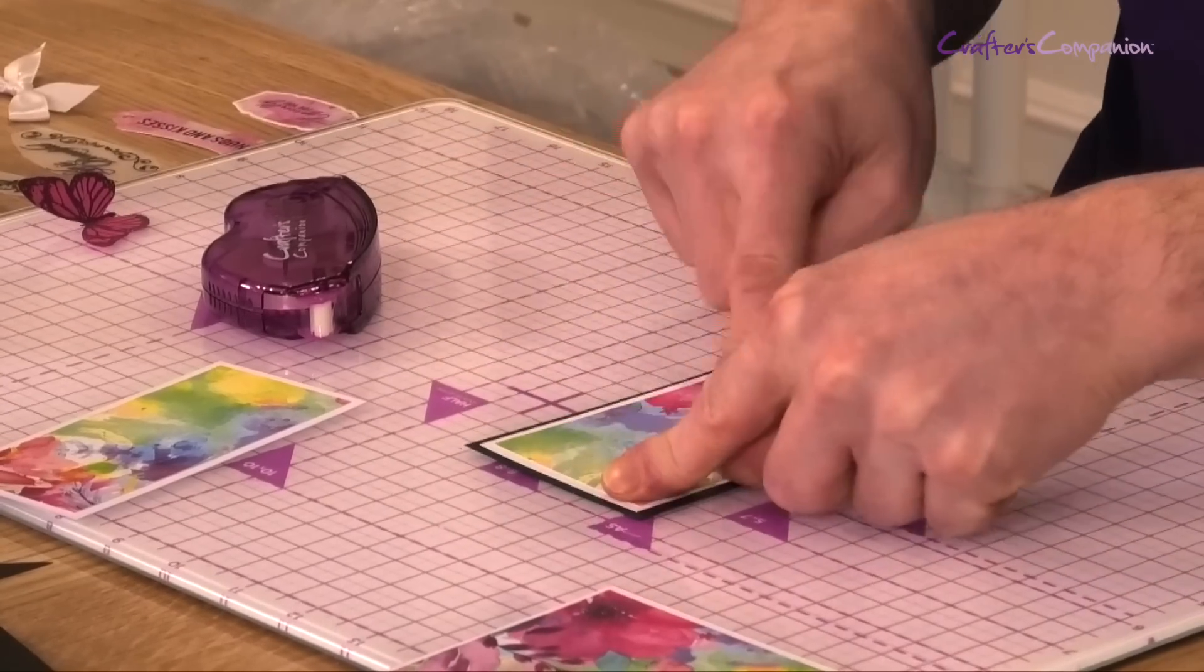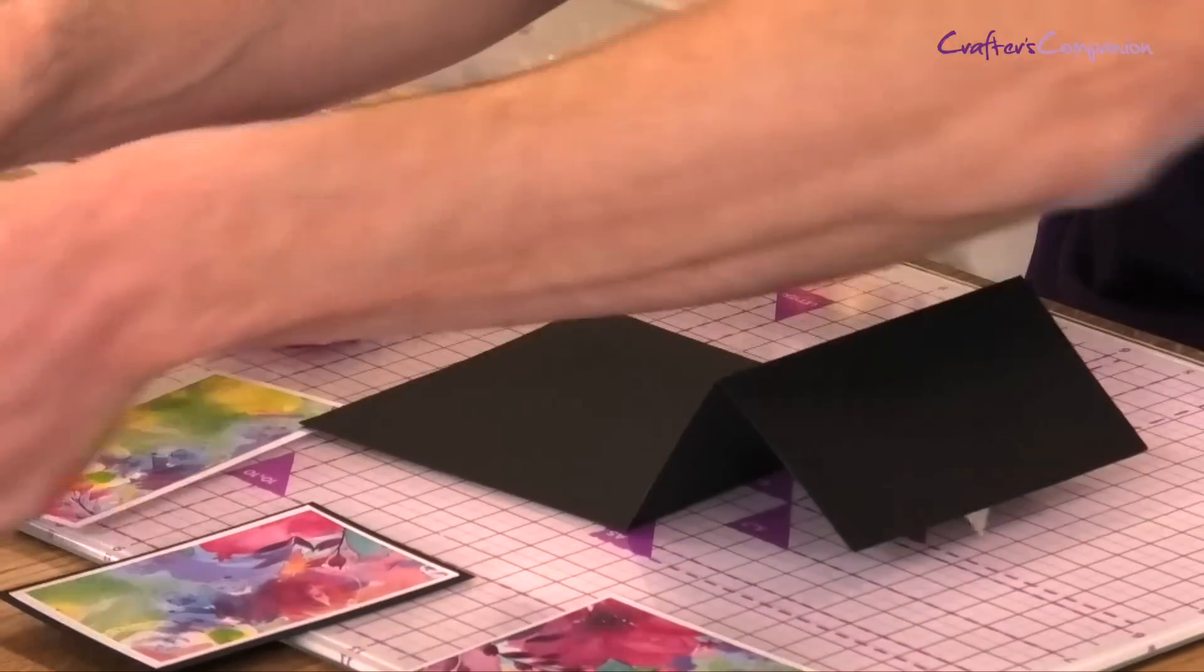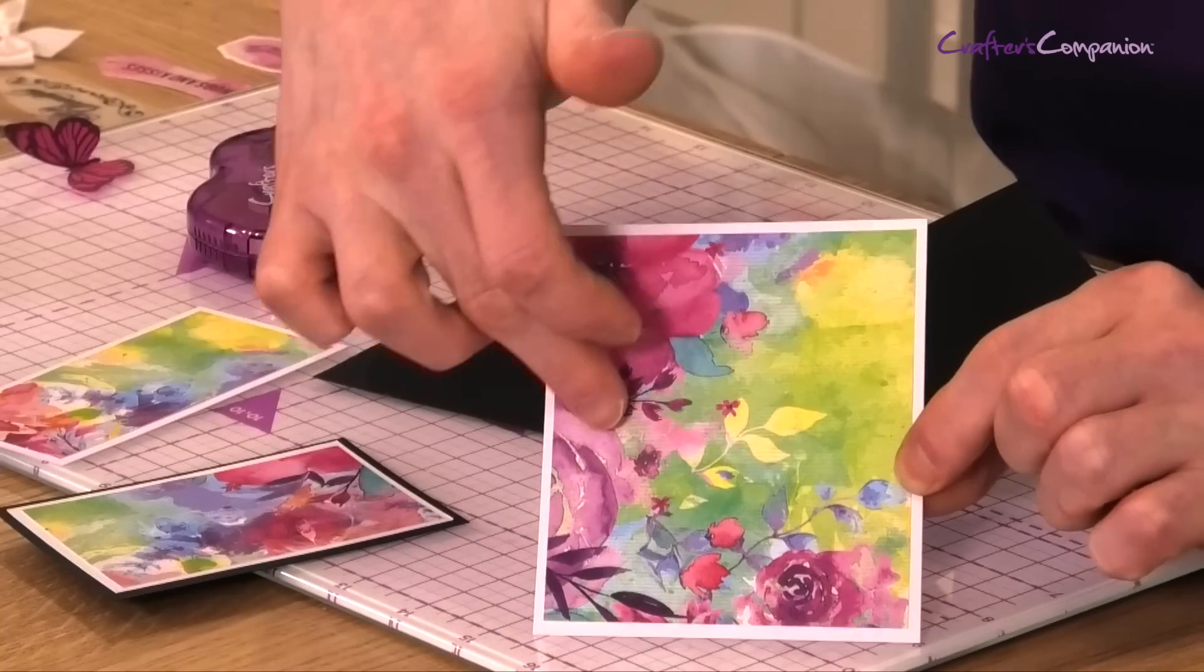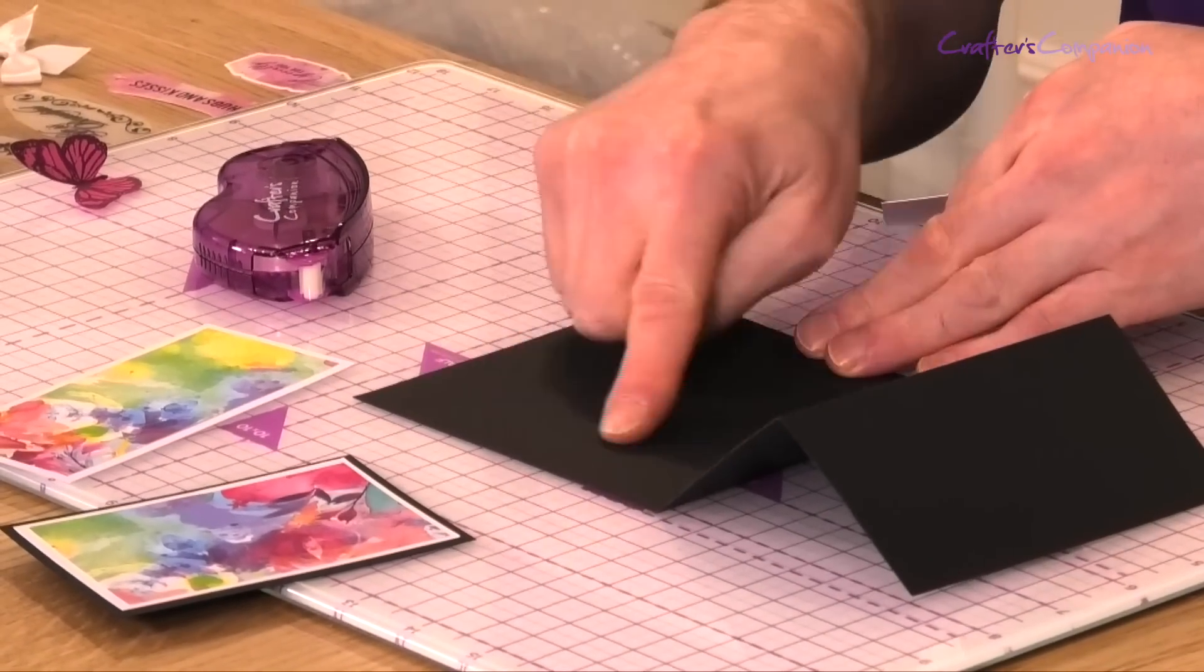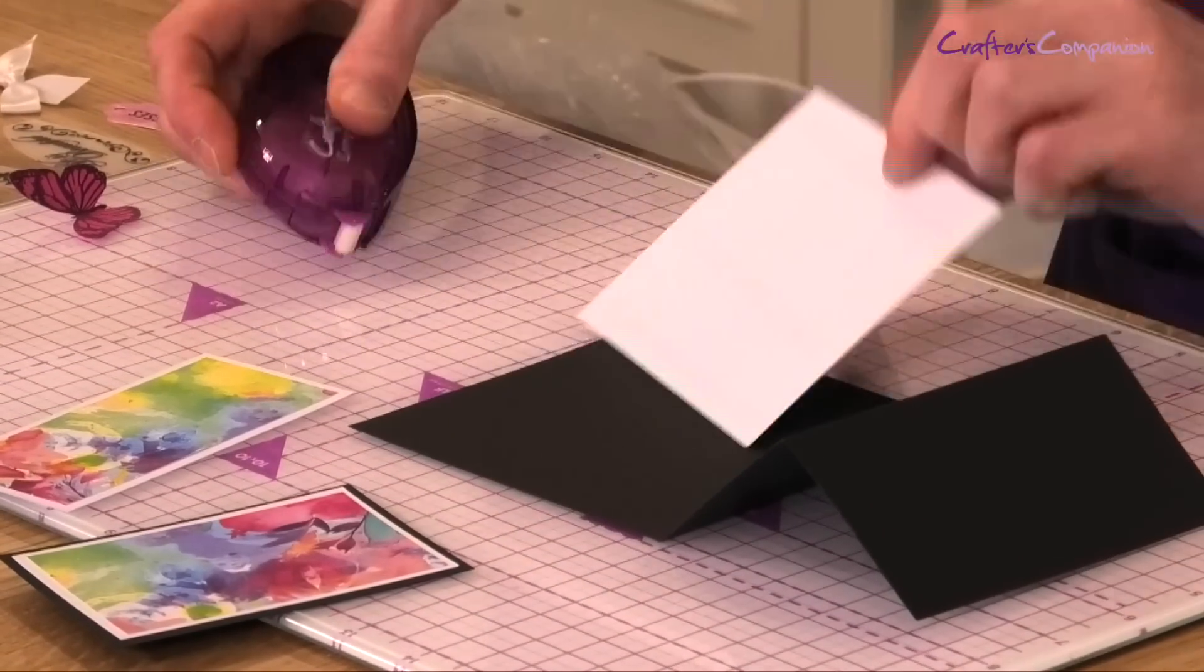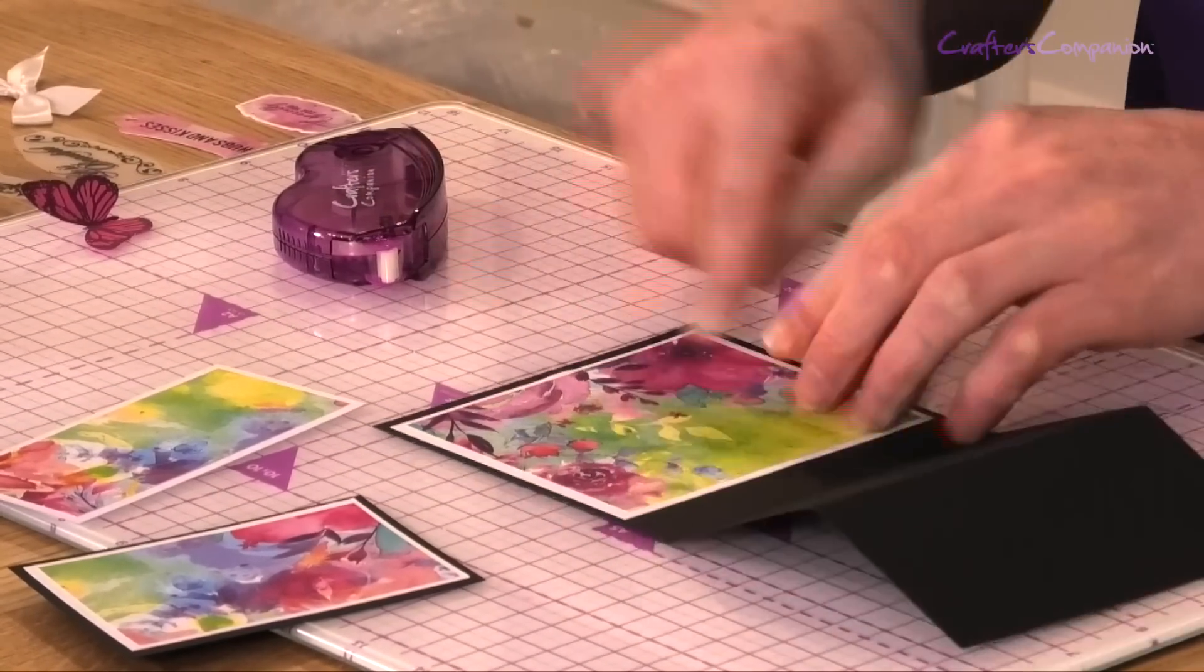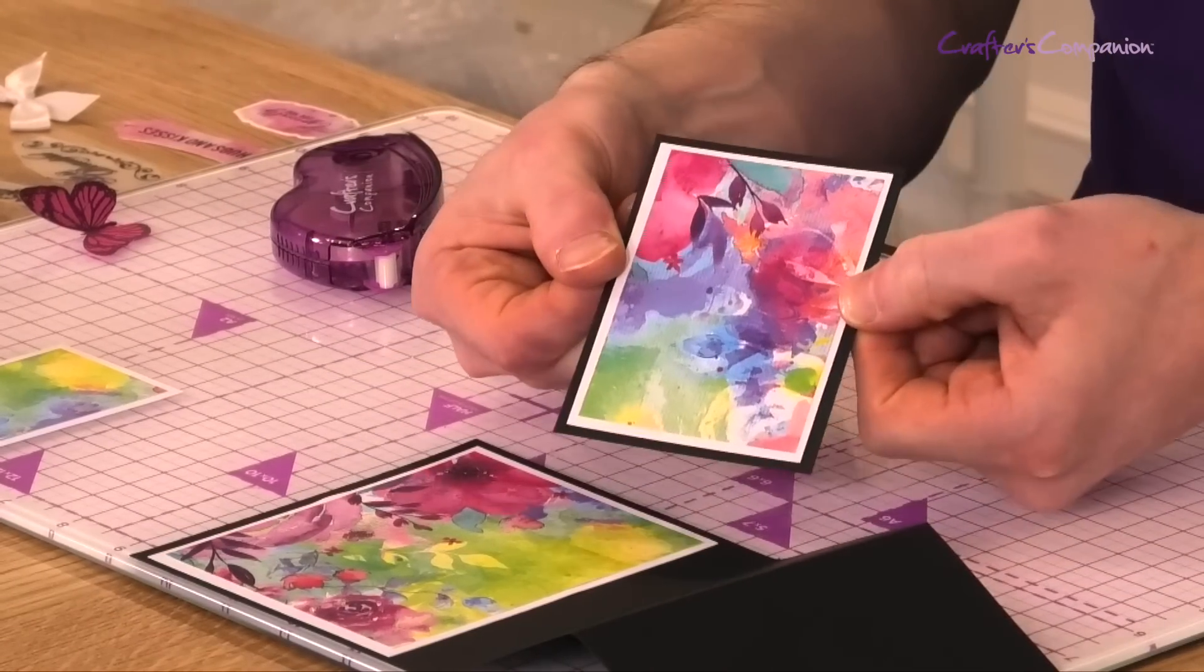So we're just going to pop that in. Now if we just bring in our card blank. Now we're just going to take this top layer. So as you can see, we've got this real detailed corner just all the way round. So I want that to show. So I'm going to want this in this top corner here, just add our double sided tape. Now we're just going to set that on. Then we're also just going to take this next layer that we've layered up on the white and black cardstock.